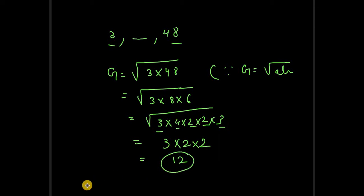So our geometric mean of 3 and 48 is 12. You can see that this is a GP or not.